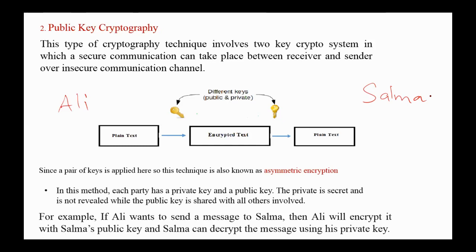For example, if Ali wants to send a message to Selma, then Ali will encrypt the message with Selma's public key. After receiving the message, Selma can decrypt it using her private key, which is unknown to Ali. So Ali knows only Selma's public key and Selma's private key is kept secret and is not revealed to anyone.